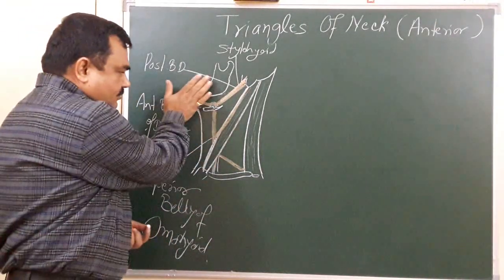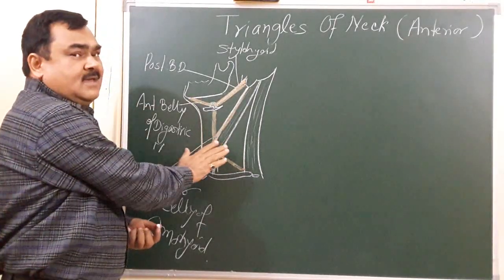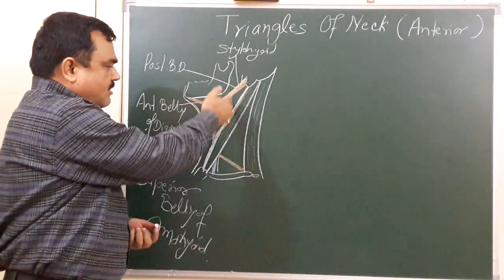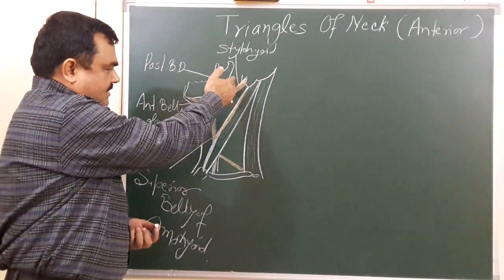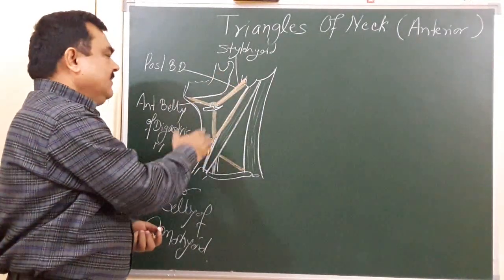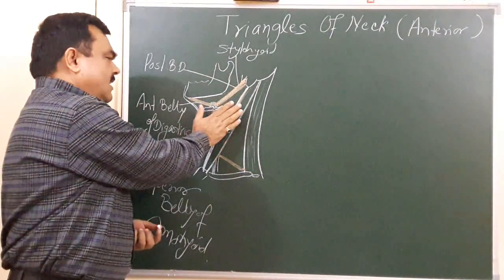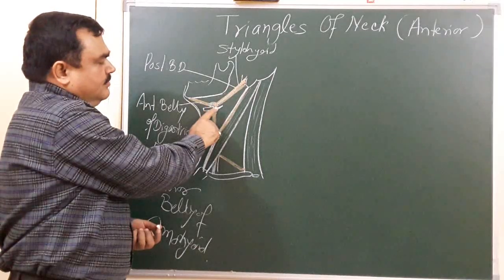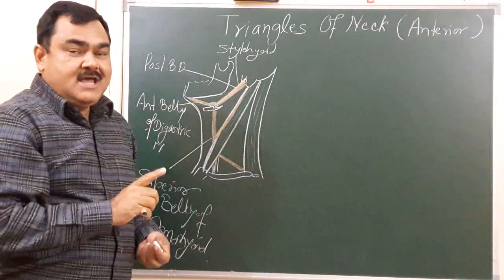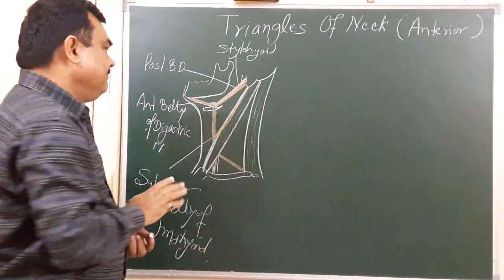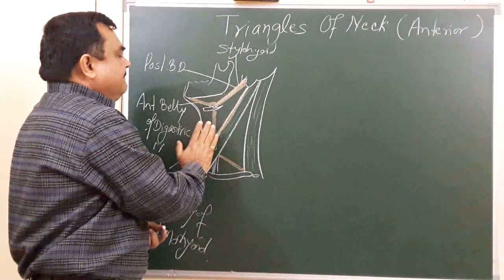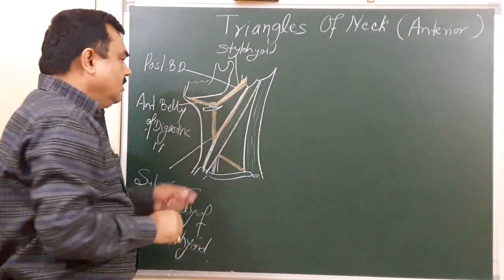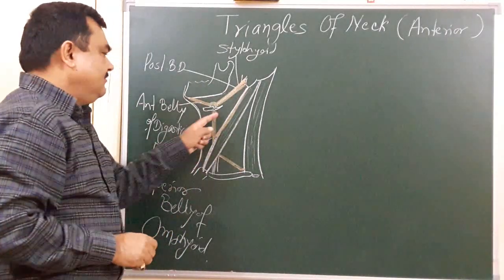The roof is formed by the superficial fascia, which contains the platysma. We have seen in previous lectures the internal jugular vein and cutaneous nerves. After these structures you will find the investing layer of deep cervical fascia. After removing these structures you will find this triangle. Now we will discuss the floor of this triangle.